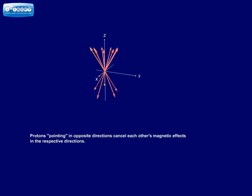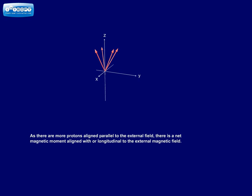Protons pointing in opposite directions cancel each other's magnetic effects in the respective directions. As there are more protons aligned parallel to the external field, there is a net magnetic moment aligned with or longitudinal to the external magnetic field.